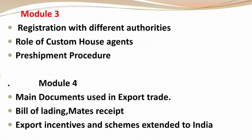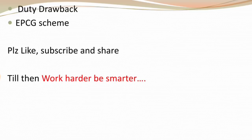Module number four meh main documents used in export trade — hume different documents padhne hai jo export trade meh use hote hai. Then we have to study the bill of lading, mates receipt — aur bhi bahot saare points hai, toh bill of lading aur mates receipt thoda comparatively important ban jata hai. Then different export incentives and schemes extended to India.